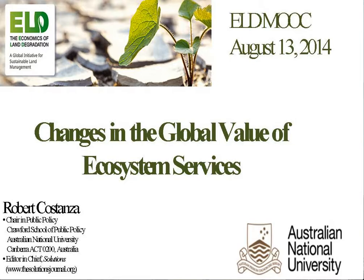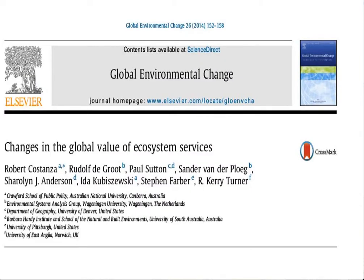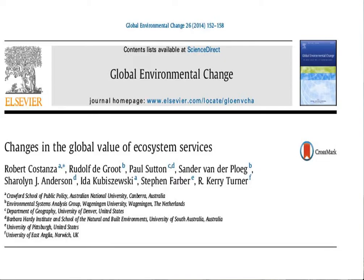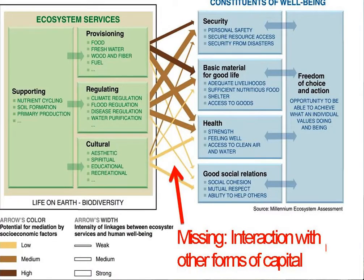Thanks, Claudia. I'll talk about this paper we just published in Global Environmental Change, where we tried to estimate the changes in the global value of ecosystem services. I'm sure you all know what ecosystem services are by now. This is the Millennium Assessment diagram showing four basic groups: provisioning, regulating, cultural, and supporting services, and their connections to the various constituents of human well-being.